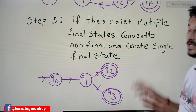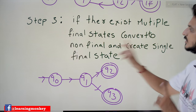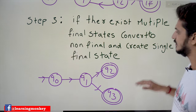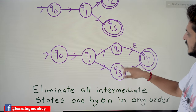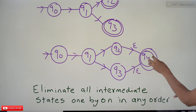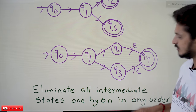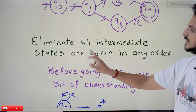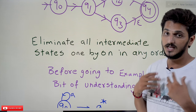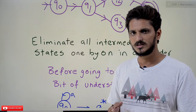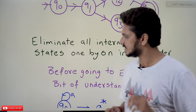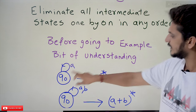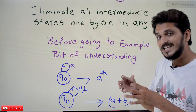After applying those three steps, eliminate the intermediate states one by one in any order. Before going into the example and the elimination process, let's look at a few general examples of finite automata and their equivalent regular expressions. With this intuition, you can easily eliminate the states.